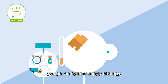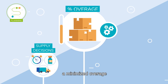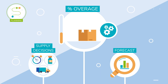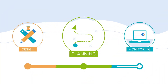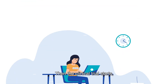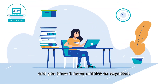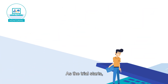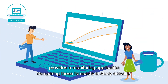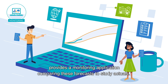As an outcome, you get an optimal supply strategy, a minimized overage, and robust forecasts from simulations. Then the clinical trial starts, and you know it never unfolds as expected. As the trial starts, the N-SIDE Supply app provides a monitoring application comparing these forecasts to study actuals.